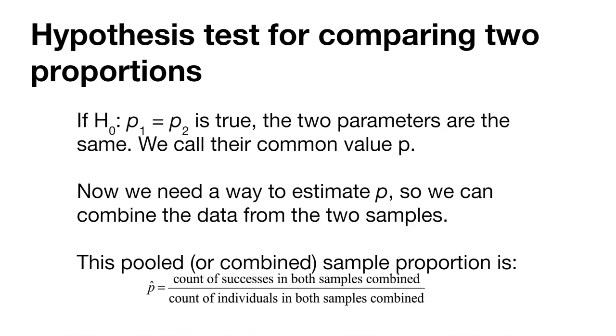We can set our null hypothesis equal to P1 equals P2. That might say that we think the population 1 proportion is the same as the population 2 proportion. If this is true, then we might think that there's no difference between them, so we think the difference might be zero. Now we need a way to estimate P so we can combine the data from the two samples. We can think about a pooled approach for the sample proportion, where we take P hat equal to the count of successes in both samples divided by the count of individuals in both samples combined. You can think about it as successes divided by all total possibilities.